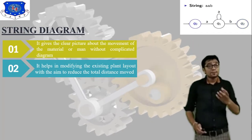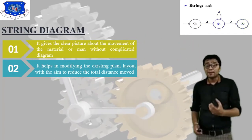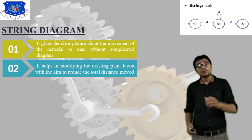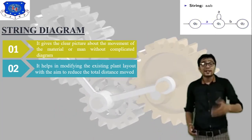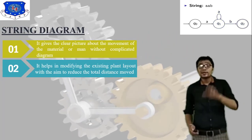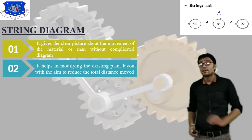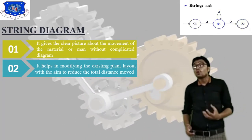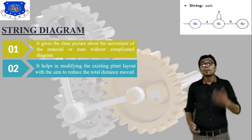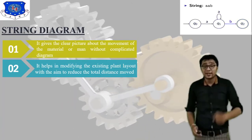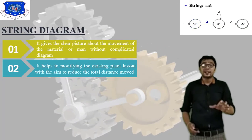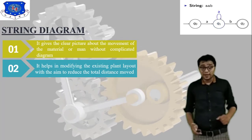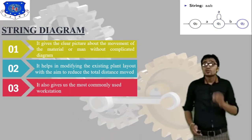The objective of a string diagram is to help in modifying the existing plant layout with the aim of reducing total distance moved or improving productivity. Our goal is clear: to improve productivity and improve our profit by modifying the existing plant layout.